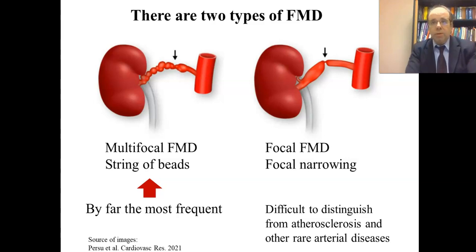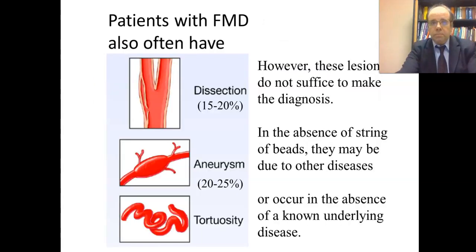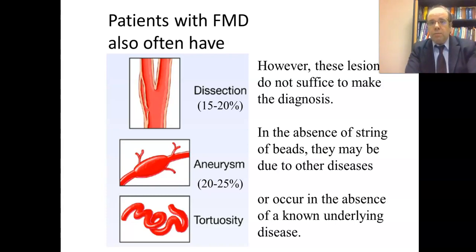The diagnosis has to be confirmed by specialists. Besides the string of beads for multifocal FMD and focal stenosis for focal FMD, patients often also have dissection (at least 15 to 20% of cases), aneurysm (at least 20% of cases), and arterial tortuosity — kinking, loops, etc. However, these lesions alone do not suffice to make the diagnosis. If you have had a dissection, aneurysm, or tortuosity, you do not necessarily have FMD, as these may be due to other diseases.